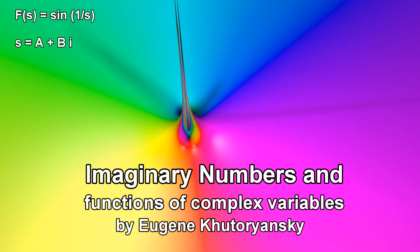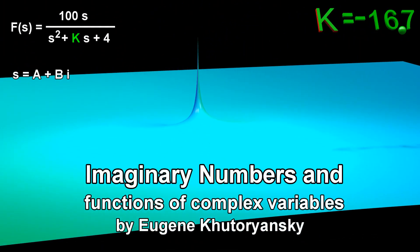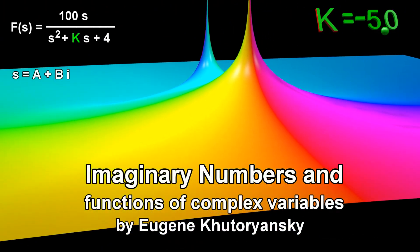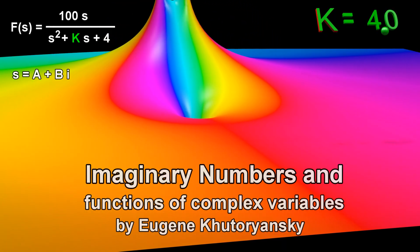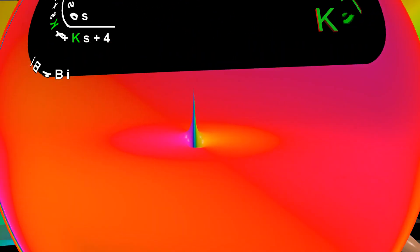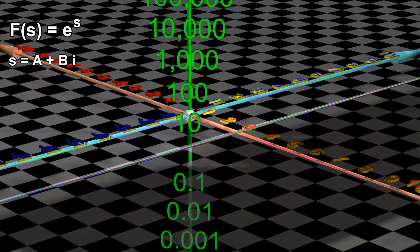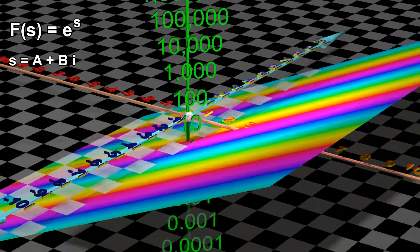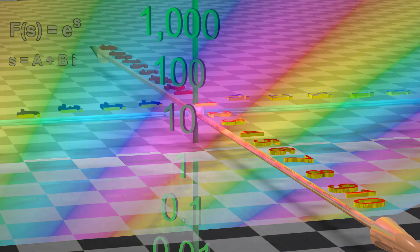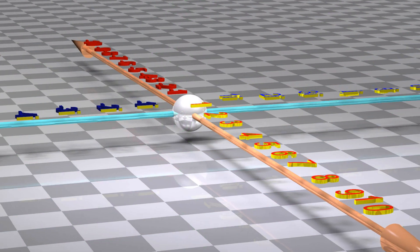Many concepts in fundamental physics and engineering depend on the existence of what we call imaginary numbers. Imaginary numbers have important practical consequences for our everyday lives, and they are key to understanding the philosophical implications of quantum mechanics. Imaginary numbers are used in Schrödinger's equation, and they are used in fields such as stability analysis, AC current analysis, and many others.